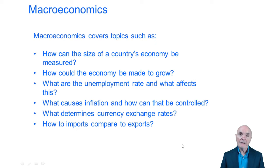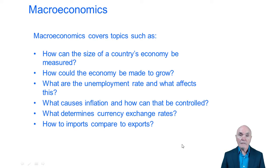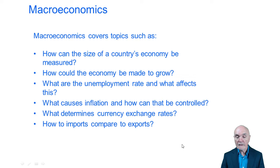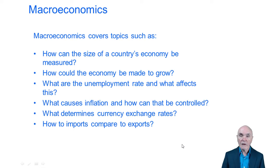If the economy is stagnating and not growing, how could we stimulate it to make it grow? What about unemployment — what is the unemployment rate, what affects it? If we've got 10% of people out of work, how can we get that down to maybe only 6%? What sort of macroeconomic levers does government have to affect unemployment?